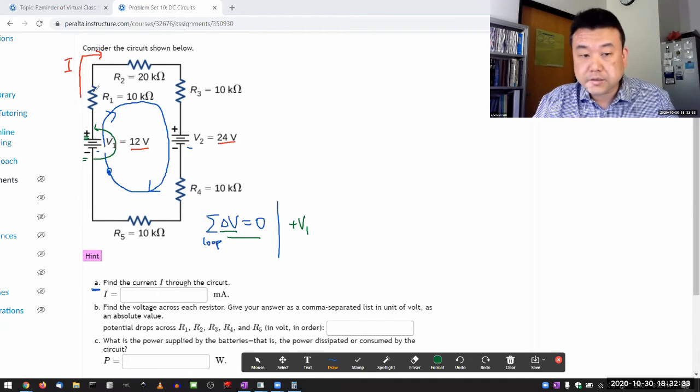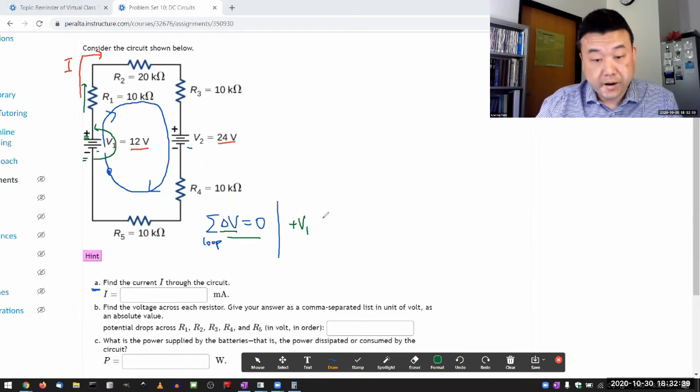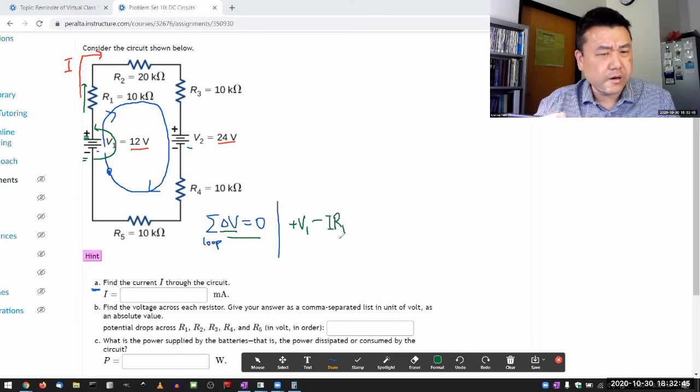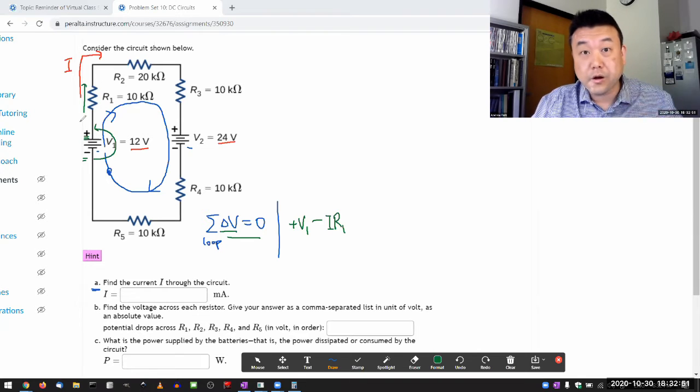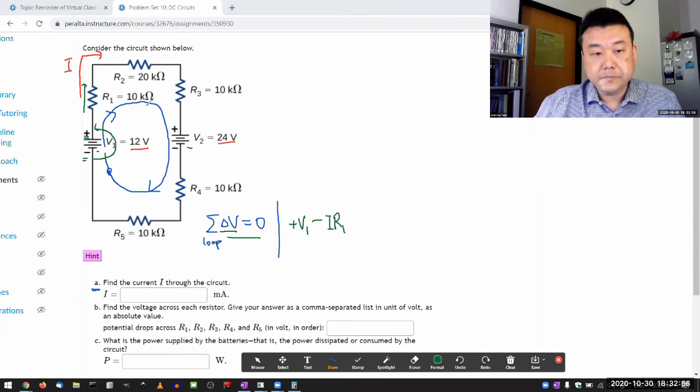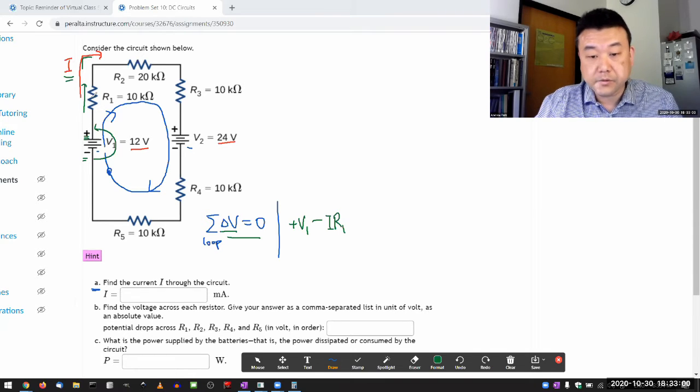Now, as I go across this resistor, I'm going in the same direction as the current. So I'm going to have a voltage drop. So it's going to be minus IR1. Now, you might be asking and wondering, hey, but what if the actual current flows the other way, then am I not going against the current?